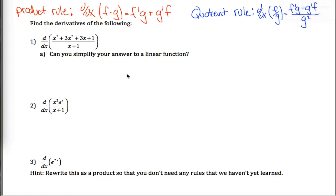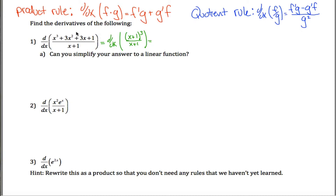I'm going to attack this problem two different ways. One way is to notice that the numerator is x plus 1 to the third power. If you were to foil this all out — x plus 1 times x plus 1 times x plus 1 — you would get x cubed plus 3x squared plus 3x plus 1. You could also recognize this via polynomial long division if you suspected x plus 1 was a factor.